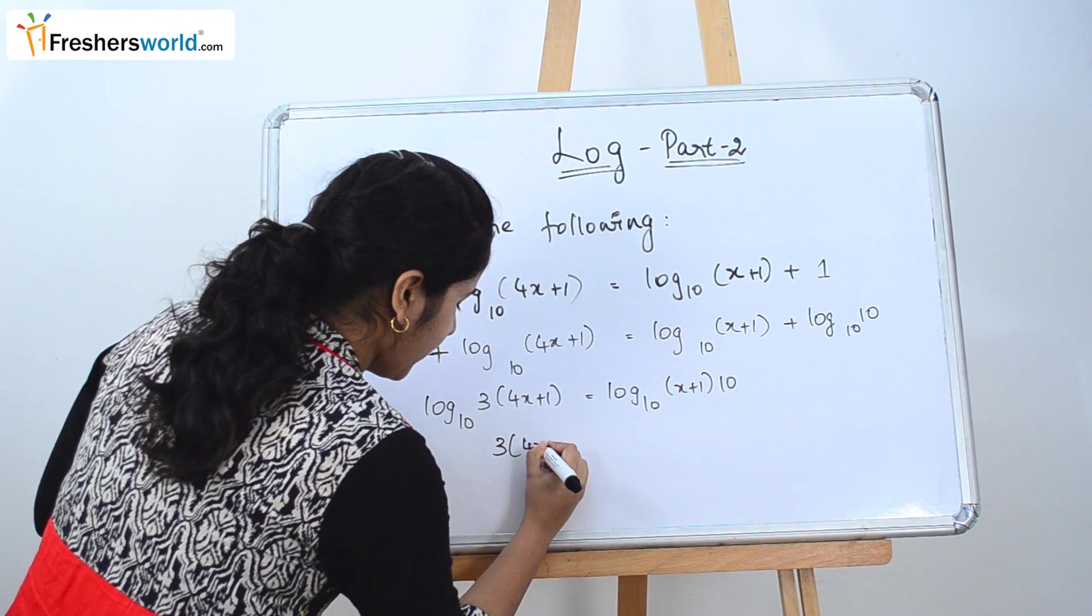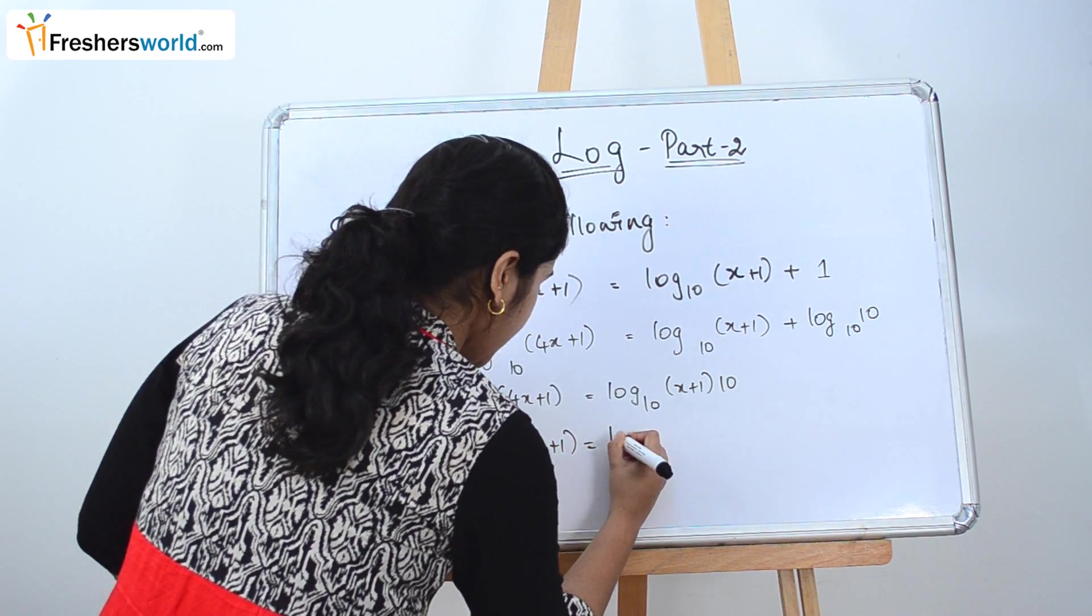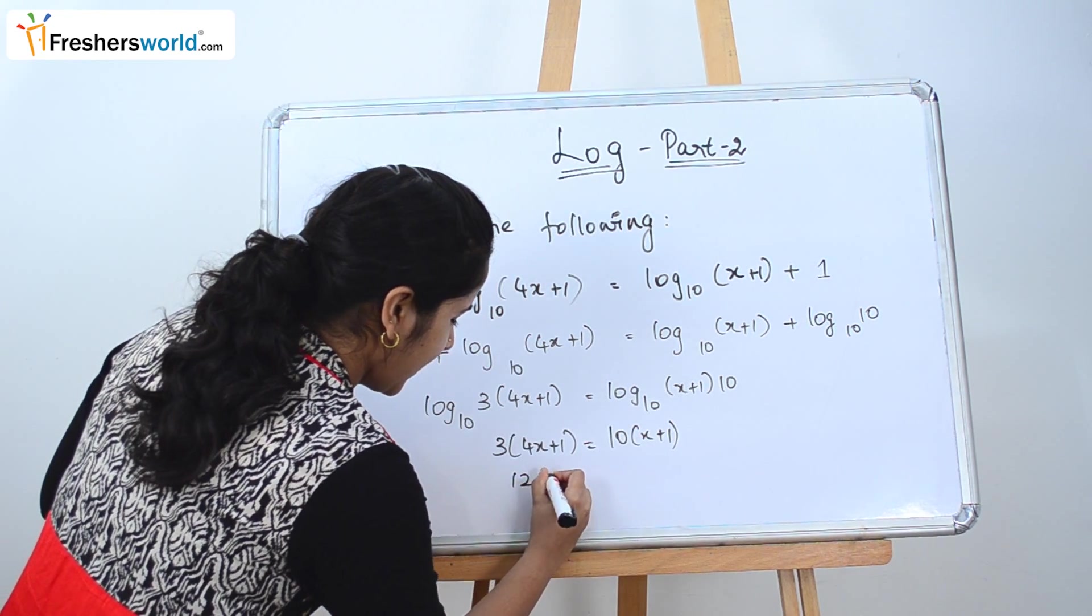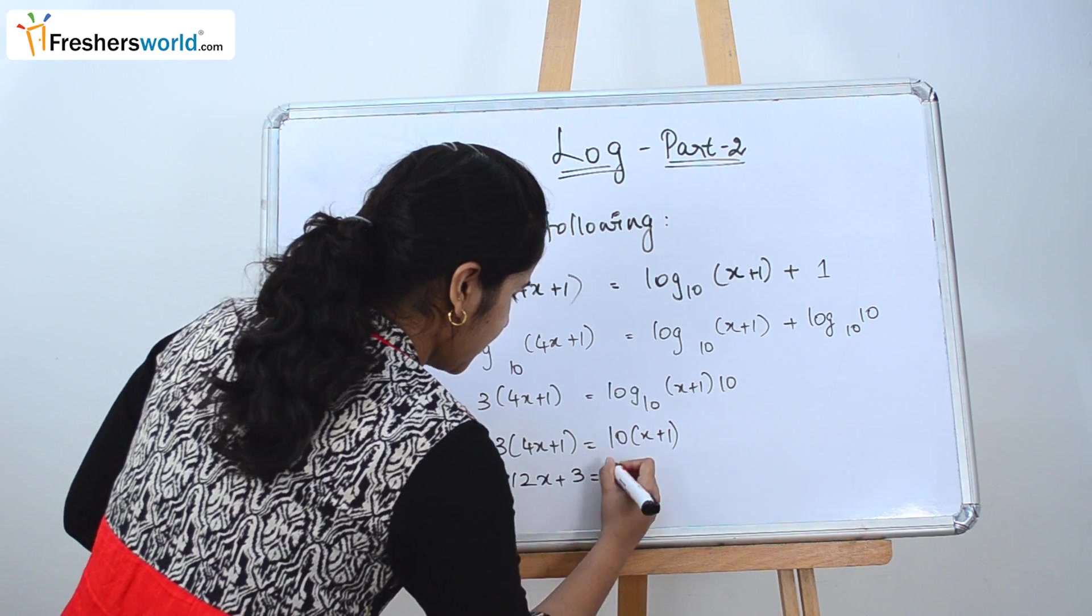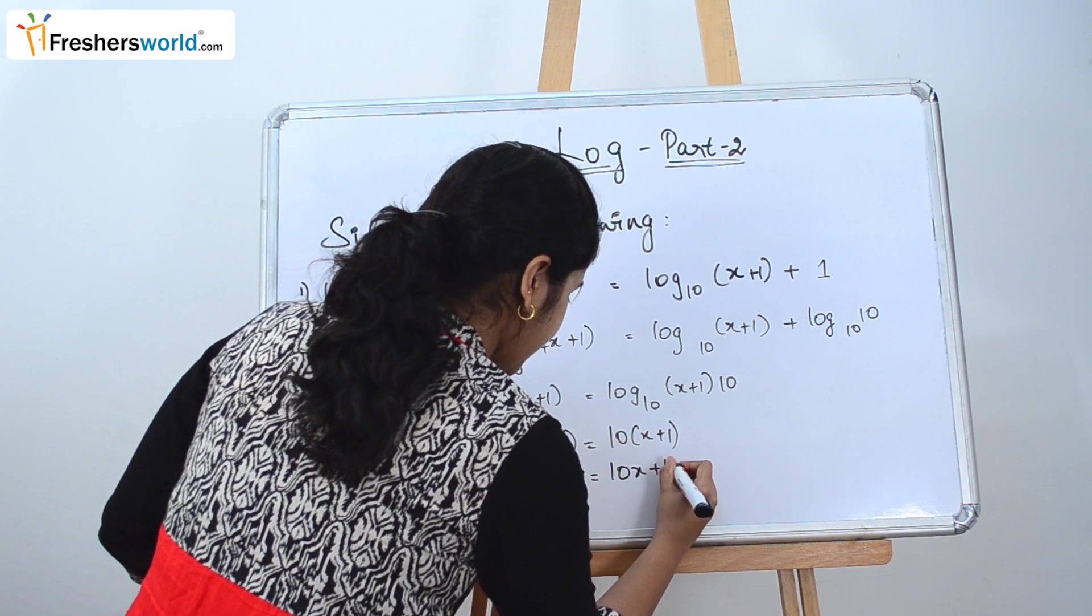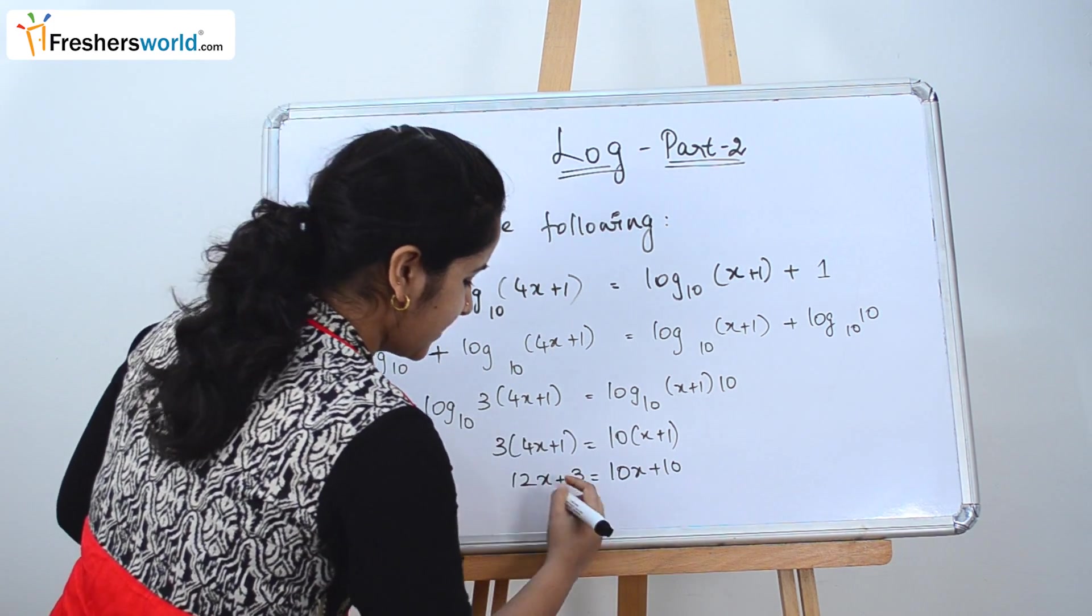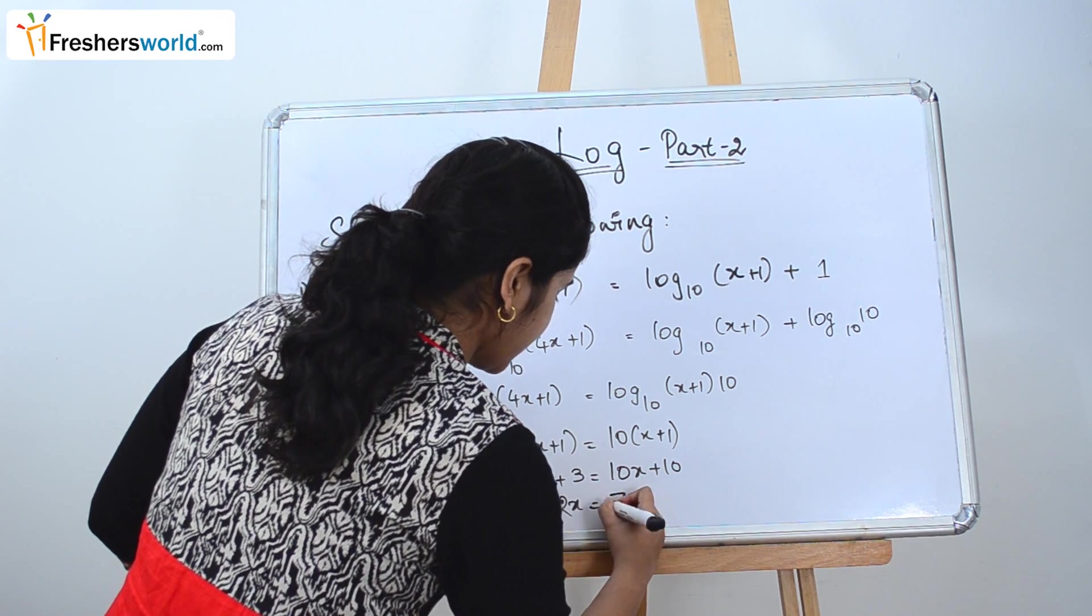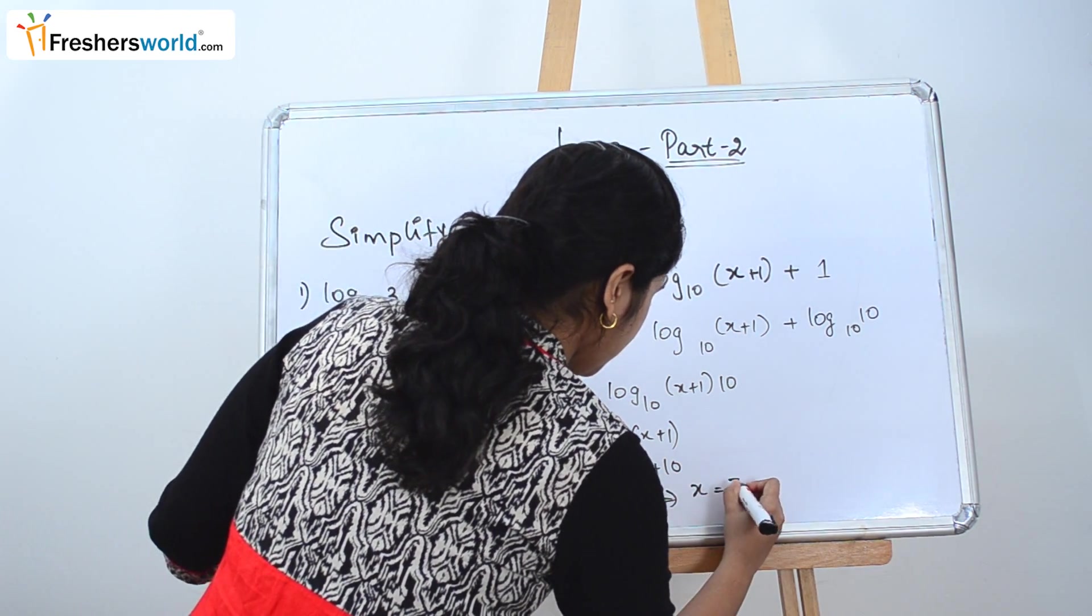So 3 times (4x+1) is equal to 10 times (x+1), which can be simplified as 12x+3 = 10x+10. So take x to one side. So 2x is equal to 10 minus 3 is 7. So x is equal to 7/2.